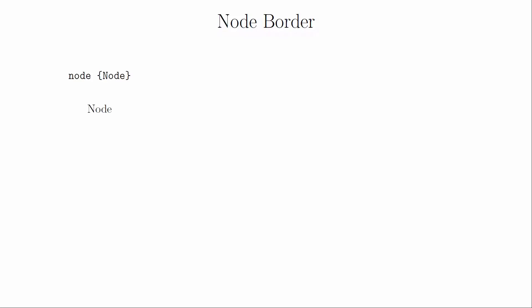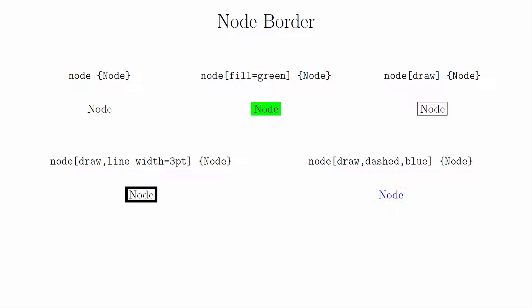The last set of options for this video will be applied to nodes. We've already seen that we can do color fills. If we wanted to put a border around the node, we would add draw inside of the optional parameters for the node. You can adjust the thickness of the border by changing the line width. In fact, the line drawing commands for color, line style, and even line joining are all available as options for the border.